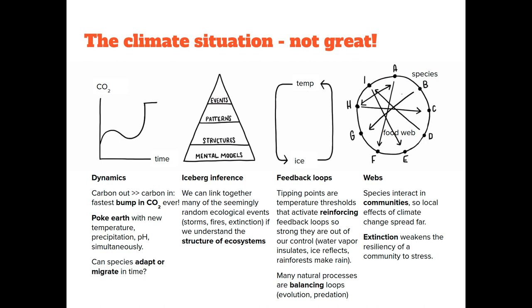Trees in the Amazon make their own weather — the less rainforest there is, the less water evaporates from leaves to make rain clouds, and the more trees die in drought. Thankfully, nature also has balancing loops like evolution. Species have been able to evolve in sync with slow climate changes in the past, but now warming is happening faster than evolution can manage. Food webs and other interactions between species can amplify the effect of climate change on one species to affect the whole ecological community. The extinction of one species breaks the links in the chain, making the food web more brittle — with fewer species and fewer links, there are fewer options for adapting.